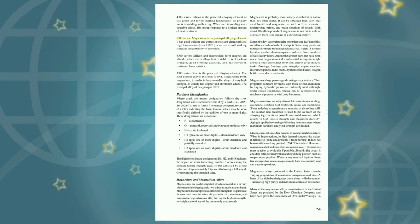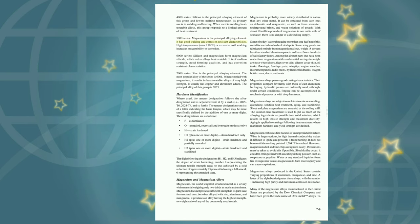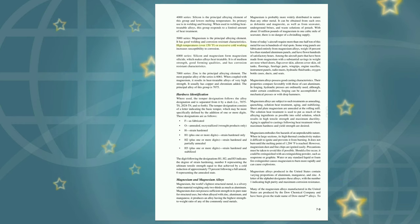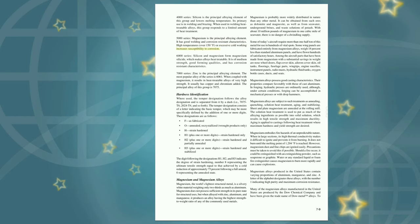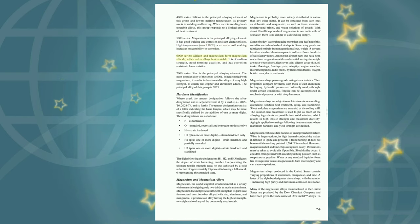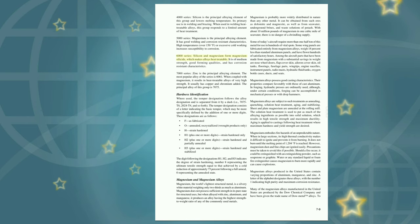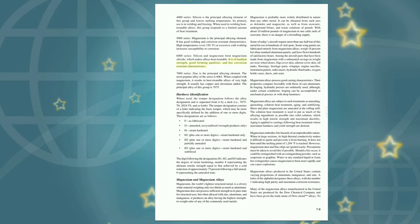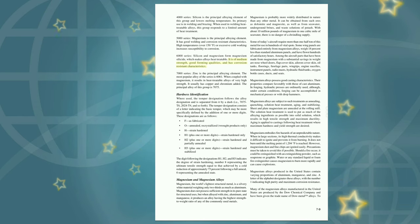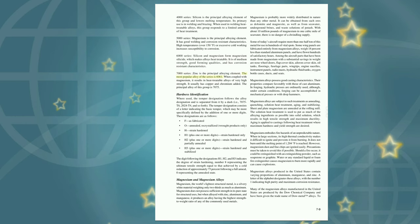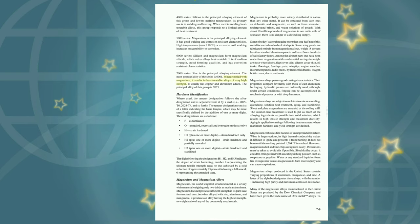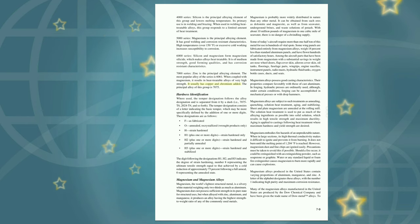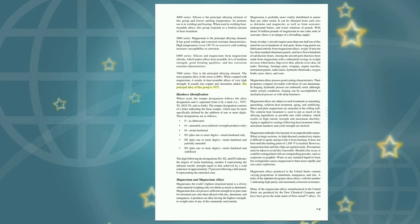The 5000 series uses magnesium as the principal alloying element, with good welding and corrosion-resistant characteristics. High temperatures over 150 degrees Fahrenheit or excessive cold working increases susceptibility to corrosion. The 6000 series: silicon and magnesium form magnesium silicide, making alloys heat-treatable; it is of medium strength with good forming qualities and corrosion-resistant characteristics. The 7000 series uses zinc as the principal alloying element. When coupled with magnesium, it results in heat-treatable alloys of very high strength, usually with copper and chromium added. The principal alloy of this group is 7075.